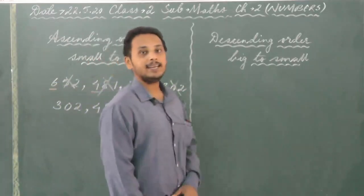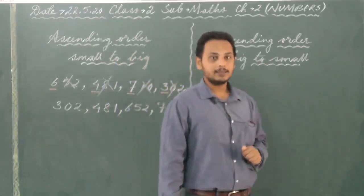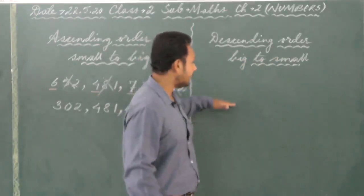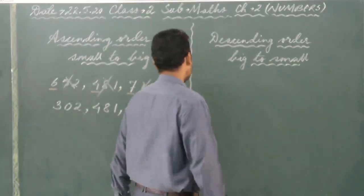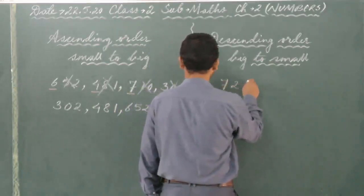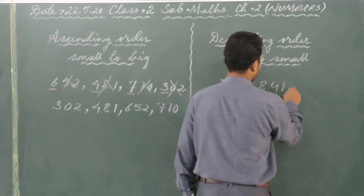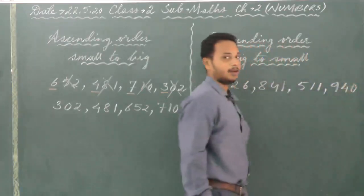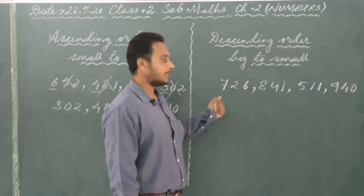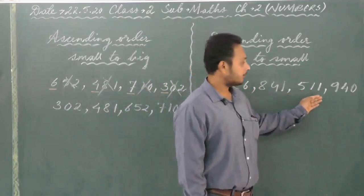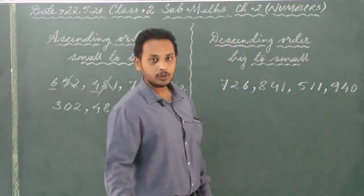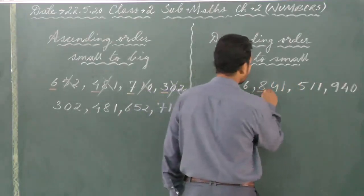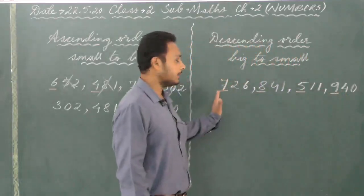Then we move to the next, that is descending order. Descending is just the opposite — descending means big to small. The biggest number will come first, going to the smallest. Once again, for example, I have given some numbers like 726, 841, 511, and 940. When you arrange numbers from bigger to smaller, we look at the numbers in the hundreds place, the first number.